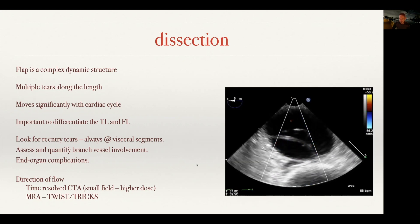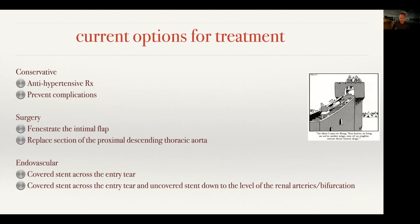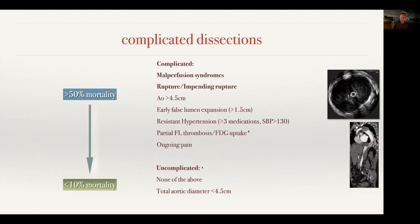These are sick patients and it is generally malperfusion that drives them into the algorithm where you need to treat them sooner rather than later. In terms of therapy options, most patients receive some degree of conservative treatment — maximum antihypertensive medication and pain control. A minority require surgery, given the high mortality risk, except in type A dissection where there is no option but to operate. Endovascular intervention is by far the most important modality to understand.